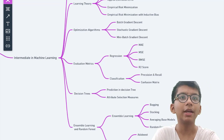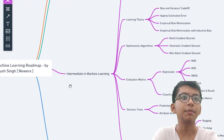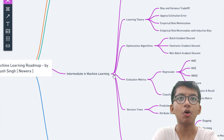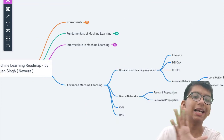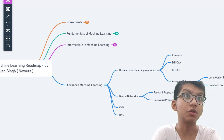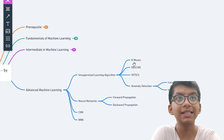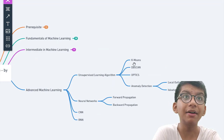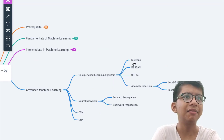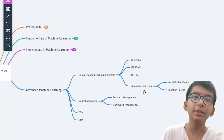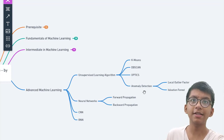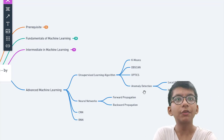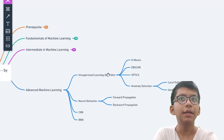Now we move to advanced machine learning. In the advanced section, cover as many unsupervised learning algorithms as you can — K-means, DBSCAN, OPTICS, hierarchical clustering, and various other algorithms. Also cover anomaly detection, including local outlier factor and isolation forest.